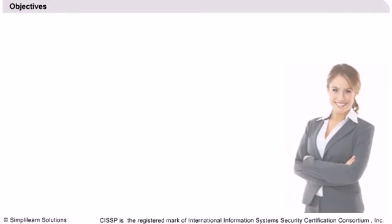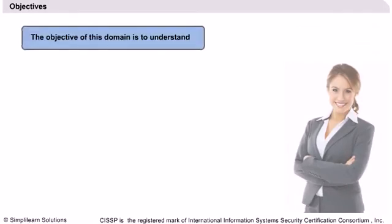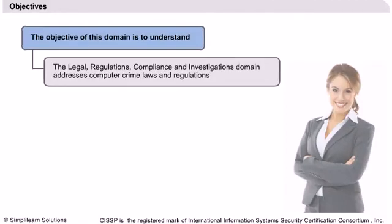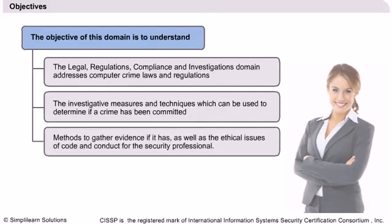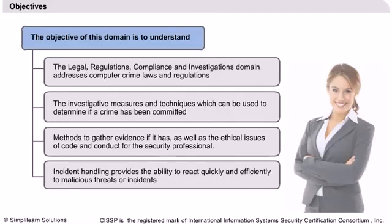According to the ISC-2 Candidate Information Bulletin, a CISSP candidate is expected to know the methods for determining whether a computer crime has been committed, the laws that would be applicable for the crime, the laws prohibiting specific types of computer crime, methods to gather and preserve evidence of a computer crime, investigation methods and techniques, and ways to address compliance.